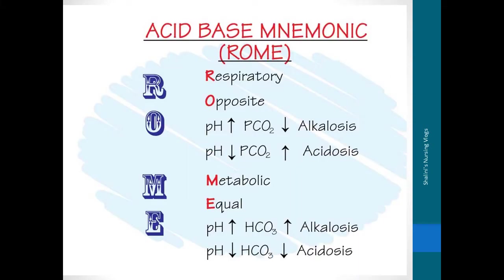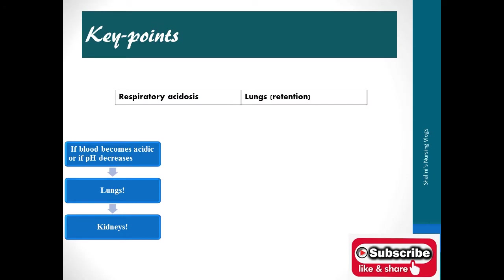This is the famous acid-base mnemonic ROME — Respiratory Opposite, Metabolic Equal. In respiratory conditions, the direction of defect is opposite: if pH increases, pCO2 goes in the opposite direction, and if pH decreases, pCO2 increases. In metabolic conditions, the direction of defect is the same. These are important key points you must remember pertaining to respiratory acidosis.